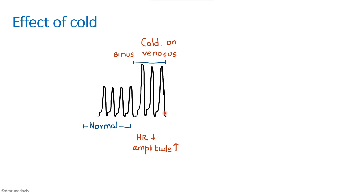When the heart rate is reduced, there will be more filling time for the ventricles, so there will be more end diastolic volume. According to the Frank-Starling law, when there is more end diastolic volume there is increased initial length, so there will be an increased force of contraction — that is why we see an increased amplitude. The heart rate is decreased and amplitude has increased; that is the effect of cold on sinus venosis.